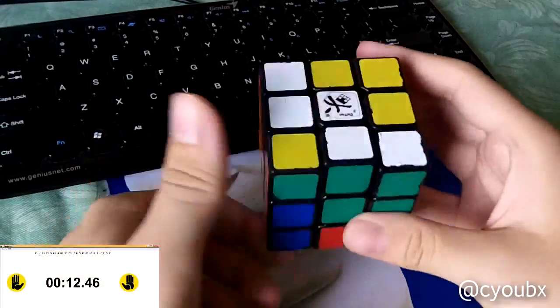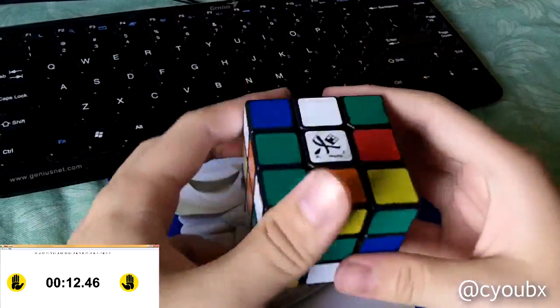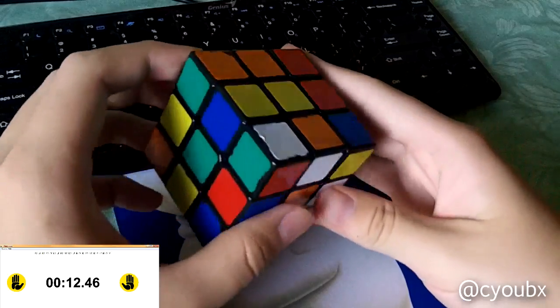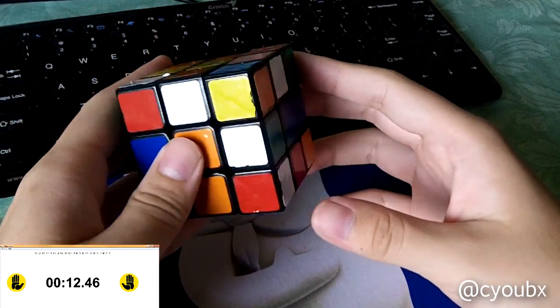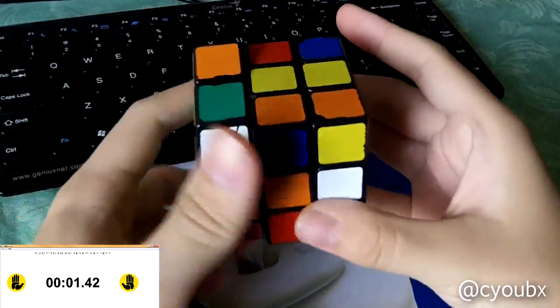F2L is the beef of any CFOP solve. It's also the one step that can be improved the most, since so many pieces are solved in this step. Thus, a fast solve needs a pretty nice F2L step. One of the skills for F2L is look-ahead. And so, what is look-ahead?